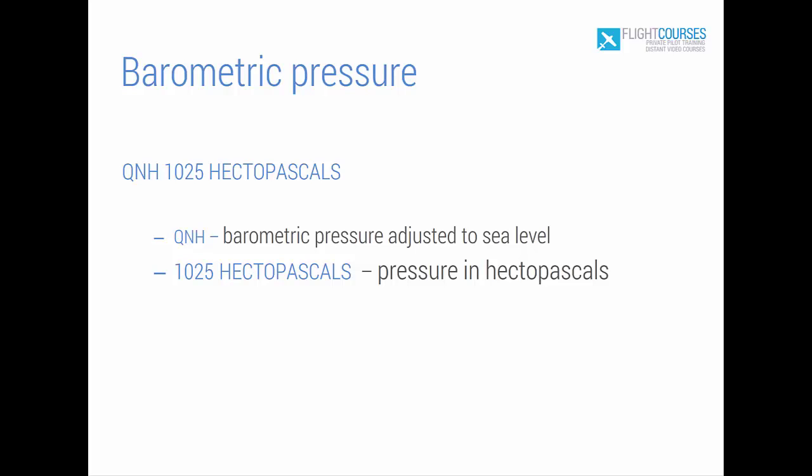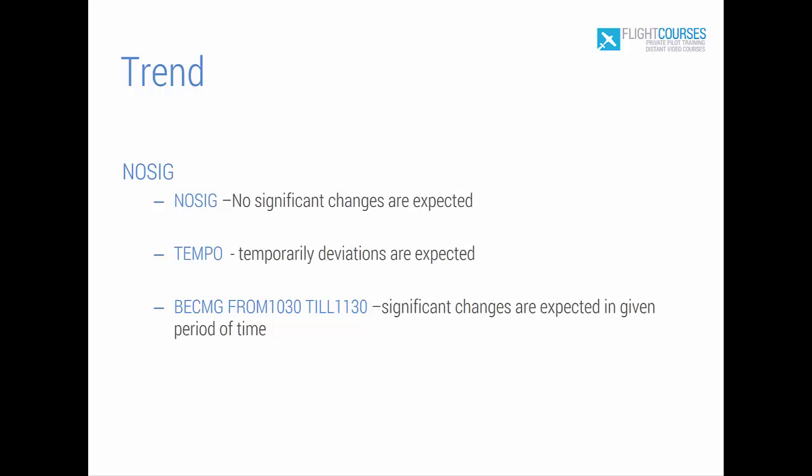We finish with the trend description of the message. Our example says NOSIG, meaning no significant changes are expected within two hours of the observation time. If the word TEMPO appeared, it would mean temporary variations are expected within two hours. We could also hear 'BECOMING from [time] to [time],' indicating a period when a significant change is expected in the area.